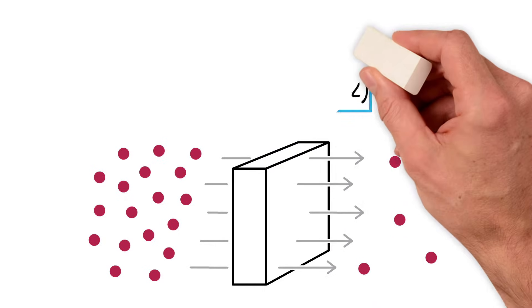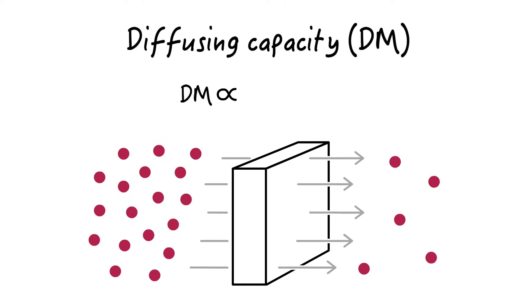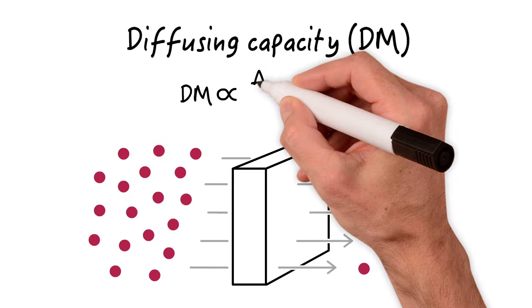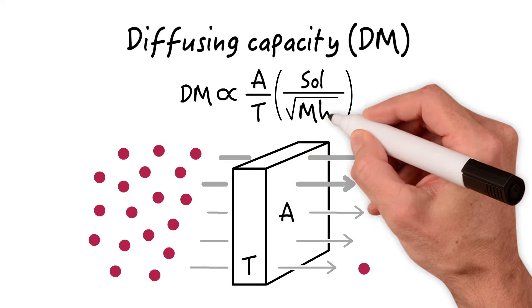The diffusing capacity of a membrane is dependent on several components: tissue plane or membrane area, tissue thickness, solubility of the gas, and the molecular weight of the gas.